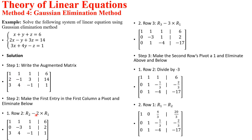Row 1 times 2 gives us 2 again. Then minus 1 minus 2 gives us minus 3. So 1 times 2 gives us 2, and 3 minus 2 gives us 1. For the augmented part, 2 times 6 will give us 12, so 14 minus 12 gives us 2. We have successfully used Row 1 as the pivot to eliminate the first element in the second row's first column.